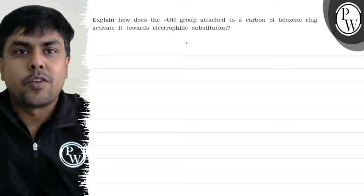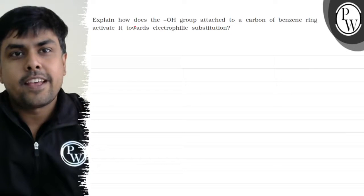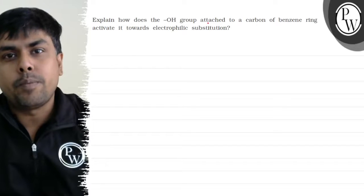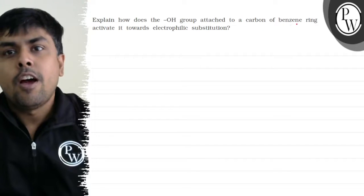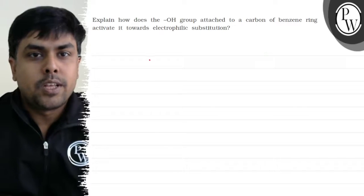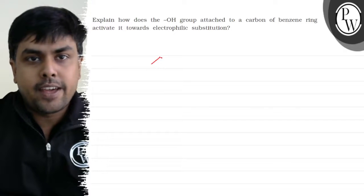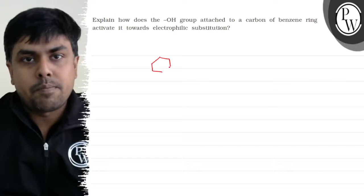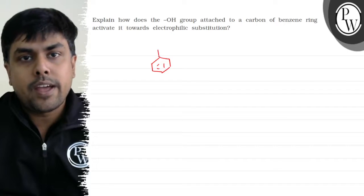Hello, let's read the question. The question says: Explain how does the OH group attached to a carbon of benzene ring activate it towards electrophilic substitution? I have a benzene ring. Which group is in this ring?